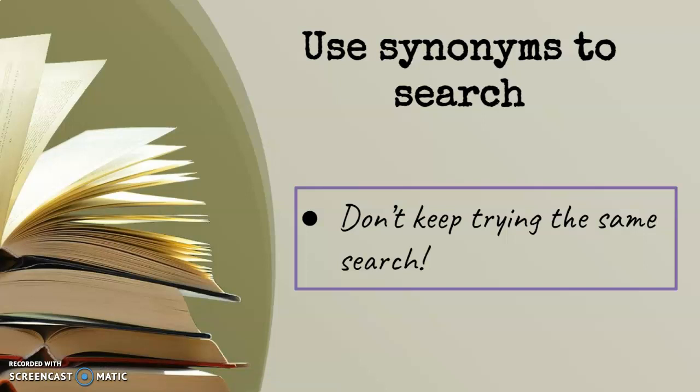You also want to use synonyms to search, so don't just keep trying the same thing over and over again. For example, if you are searching for wind energy and not getting the results you want, think of synonyms: wind turbines, renewable energy, or wind power. Or if you're doing a paper on discrimination, you could also try prejudice, bias, inequity, or racism.